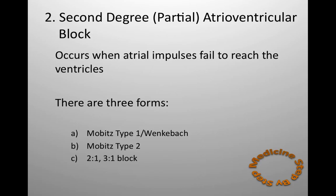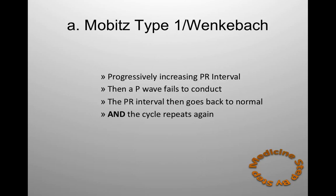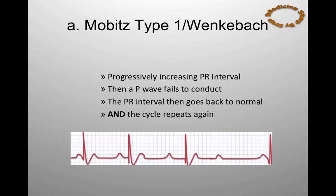Next, there is second degree partial atrioventricular block. This happens when the atrial impulses fail to reach the ventricles. There are three different forms. First, there is Mobitz type 1, also known as Wenckebach. On the ECG, you will see a progressively increasing PR interval. The PR interval increases and then suddenly one of the P waves fails to conduct and the QRS complex is dropped, so it does not appear on the ECG. After the dropped QRS complex, the PR interval then goes back to normal and the cycle repeats itself.